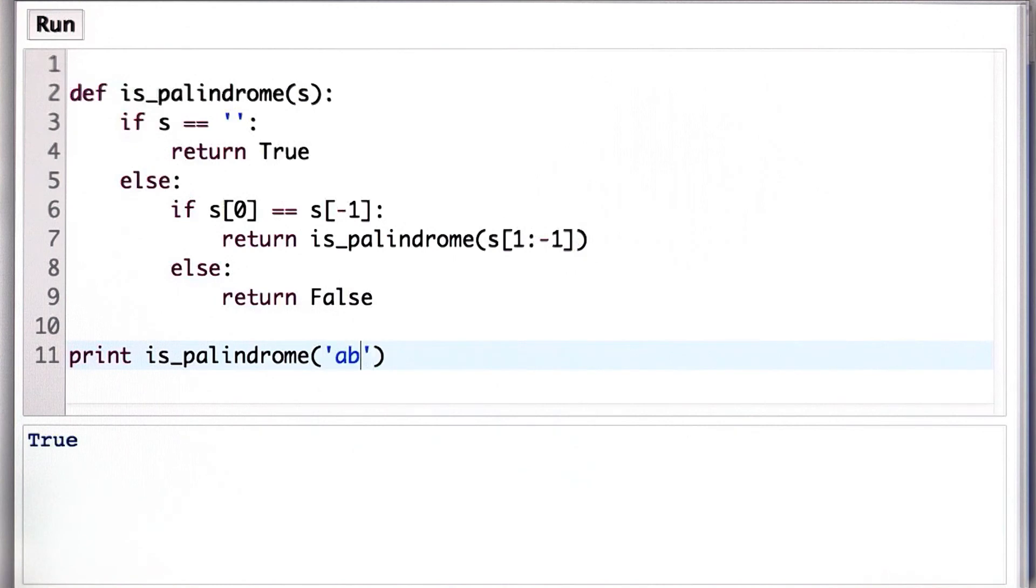If we try, say, the string ab, which is not a palindrome, we get false.